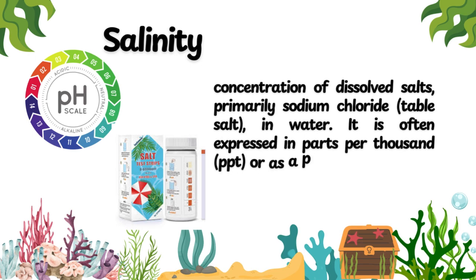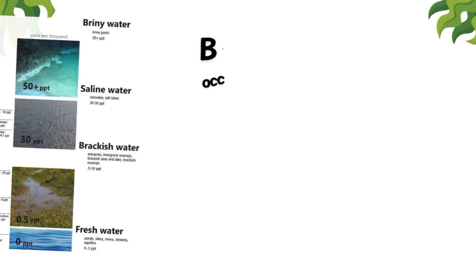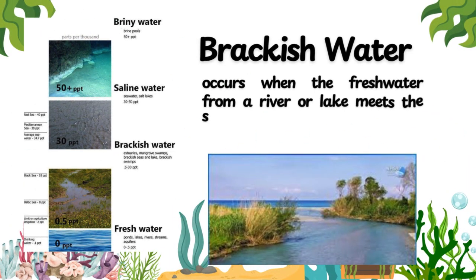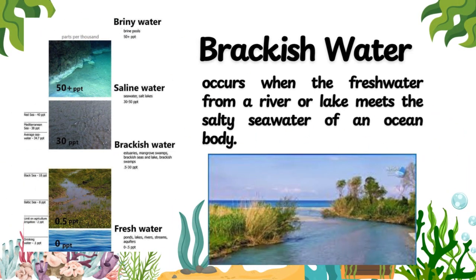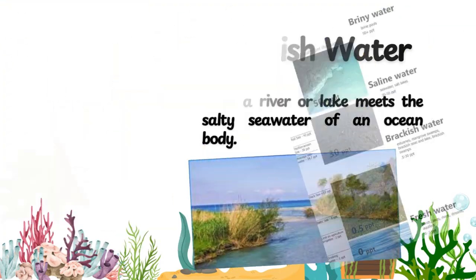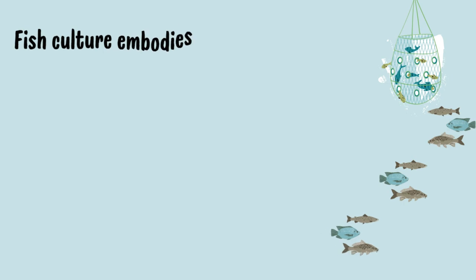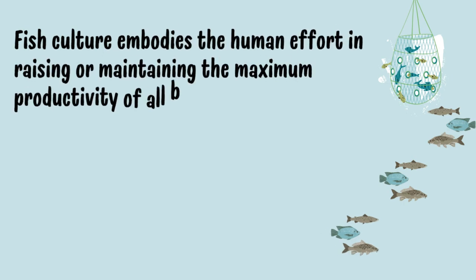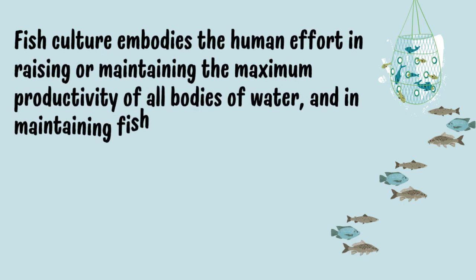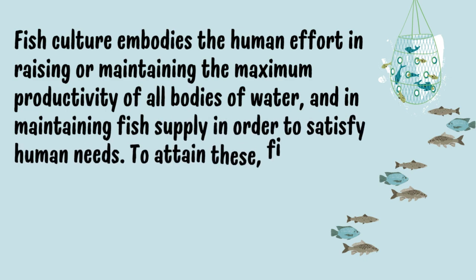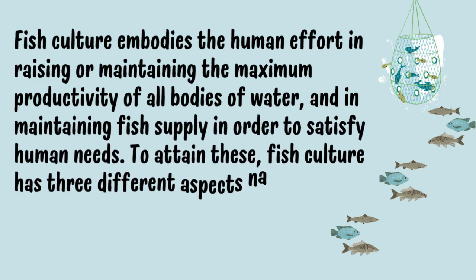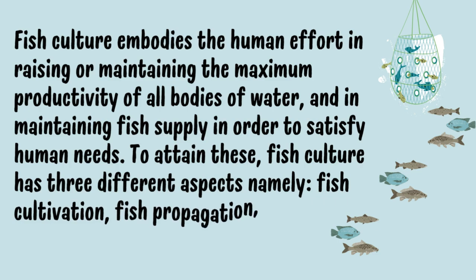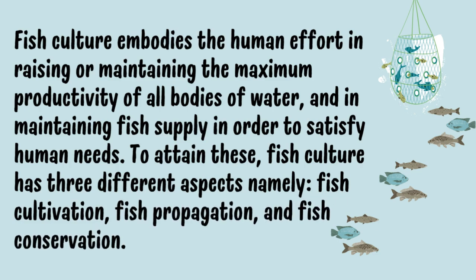Salinity is often expressed in parts per thousand (PPT) or as a percentage. Brackish water occurs when the fresh water from a river or lake meets the salty sea water of an ocean body. Fish culture embodies the human effort in raising or maintaining the maximum productivity of all bodies of water and in maintaining fish supply in order to satisfy human needs. To attain these, fish culture has three different aspects: fish cultivation, fish propagation, and fish conservation.